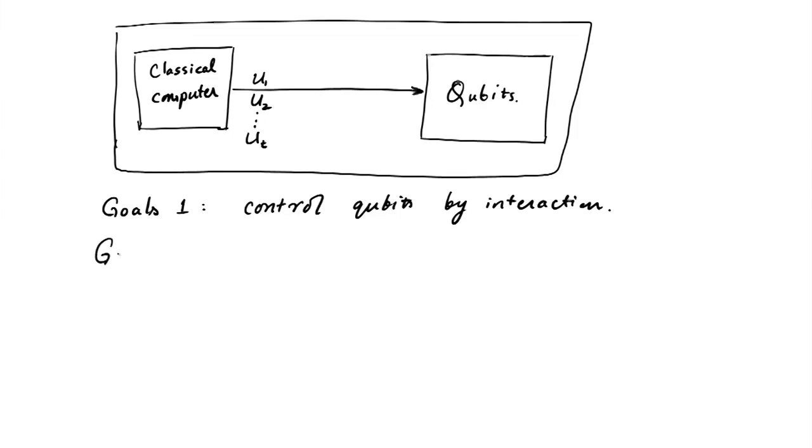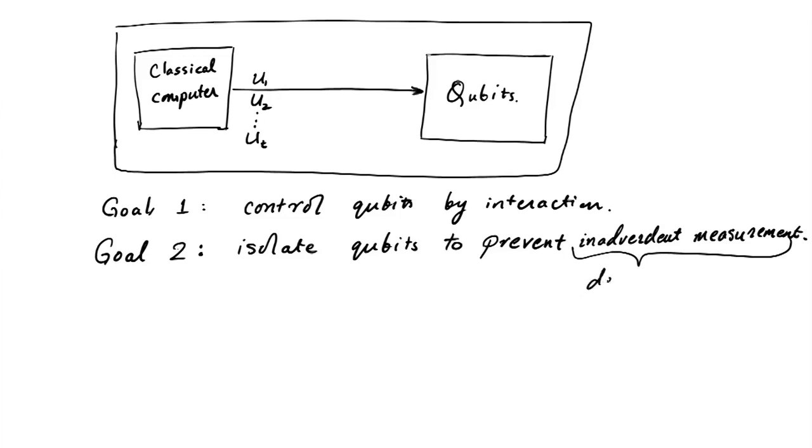But then this seems to contradict goal number two, which is to isolate our qubits. This kind of inadvertent measurement of our quantum system is called decoherence. Decoherence is when our environment inadvertently measures the qubits.